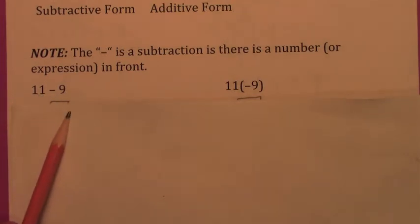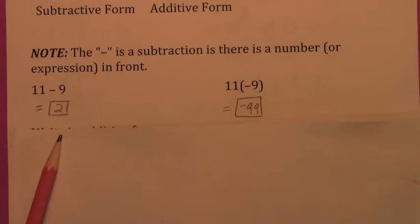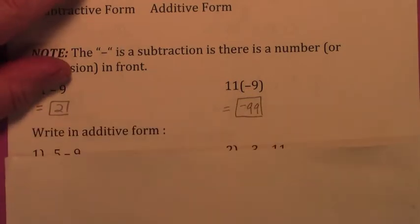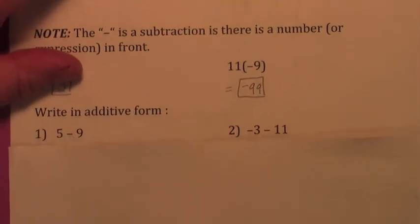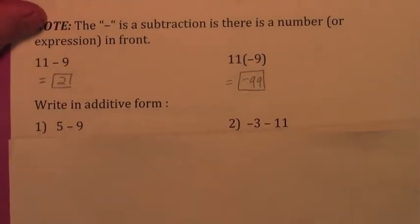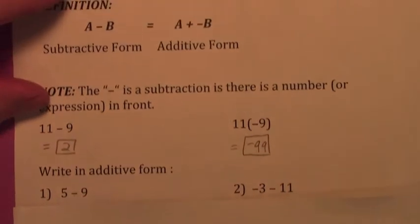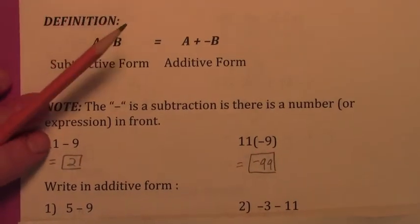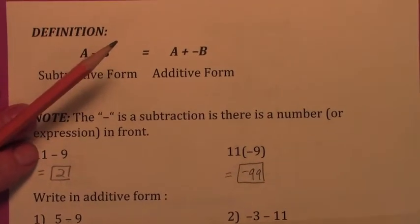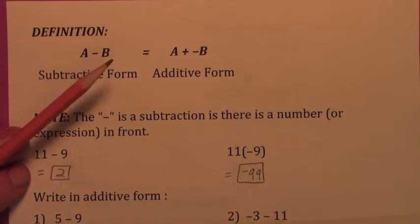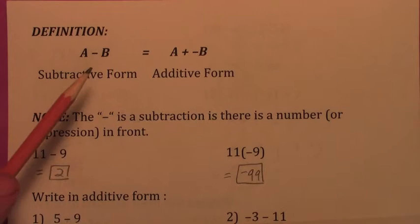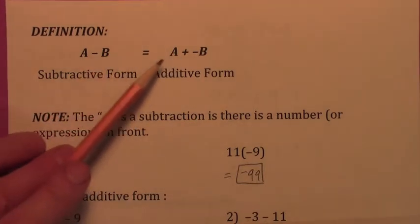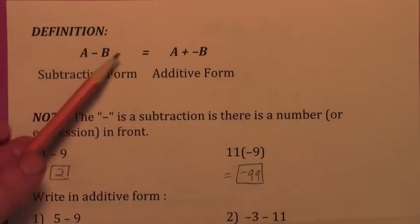So the first one equals two, and the second one equals negative ninety-nine. What we're going to do here — this seems like a lot of writing, but eventually we'll abbreviate. For now, it's really important to understand what the definitions are. Learn the definitions really well, and then you can start using abbreviations.